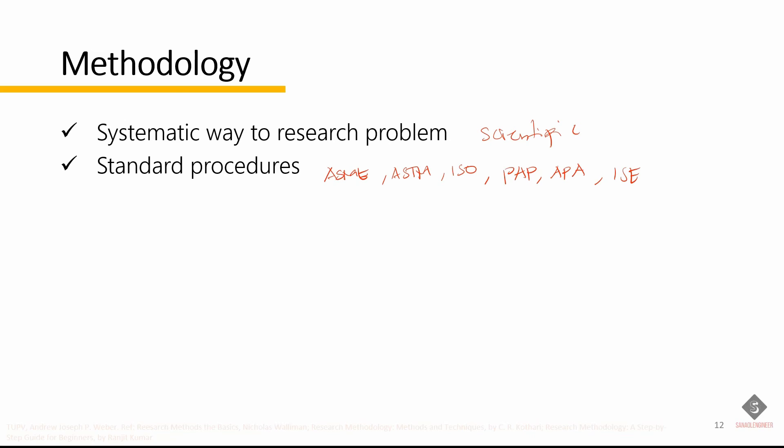Researchers not only need to know how to develop certain tests, or indices, or indicators, how to calculate the mean, the mode, the median, or the standard deviation, or the chi-square, how to apply particular research techniques. But they also need to know which of these methods or techniques are relevant and which are not, and what would they mean and indicate and why. In other words, you have to justify. There must be a justification of why you choose that method.